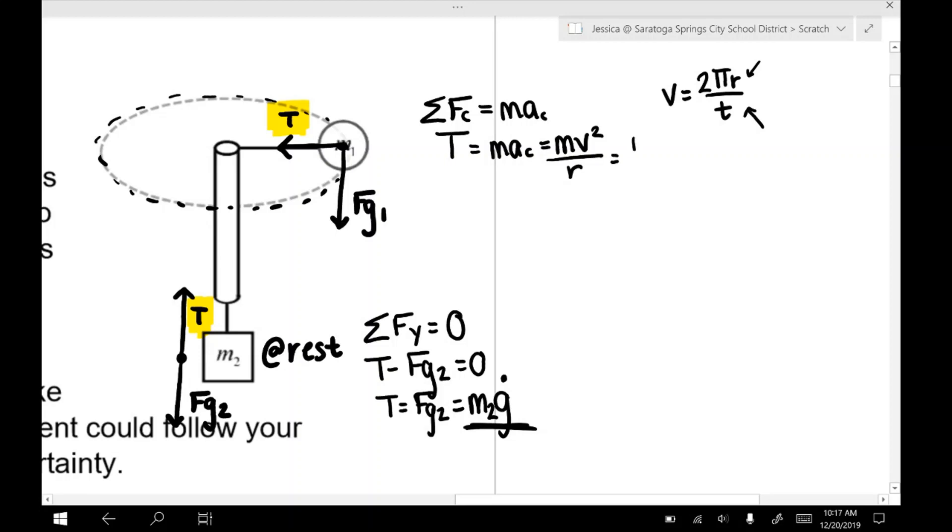So this equation for tension really becomes M times 2πR over T, and everything in that parentheses is squared over R. So when we distribute that, we get 4π² R² over T², and there's an R downstairs. Okay, one of the R's cancels, so we're left with 4π² MR over T squared. So it looks like there's a direct relationship between the tension and the radius, the tension and the mass 1, and the tension and the period have an inverse relationship.